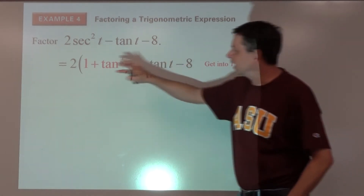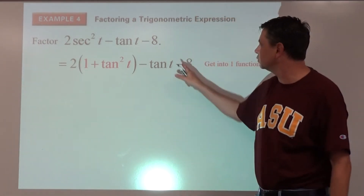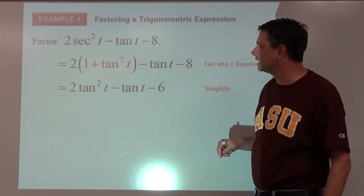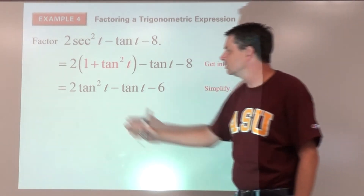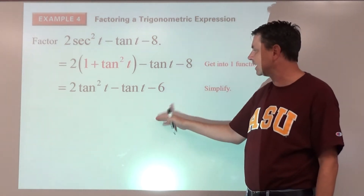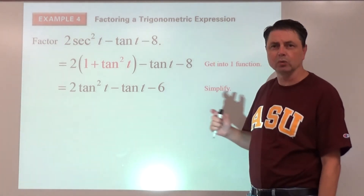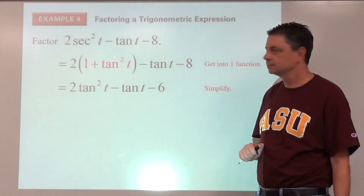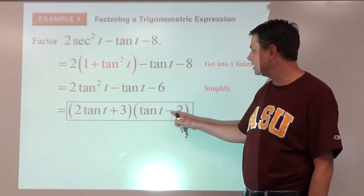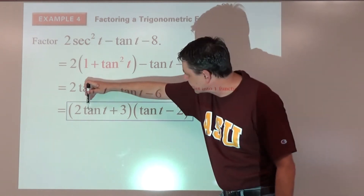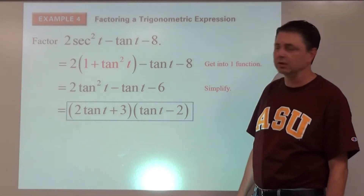Distribute the two and combine like terms: two times two is four, minus eight gives negative six for the constant. Now factor as a binomial times a binomial. It works out as two tangent t plus three, times tangent t minus two — checking: negative four tangent t plus three tangent t gives the needed negative one tangent t in the middle.